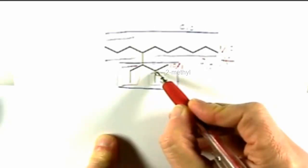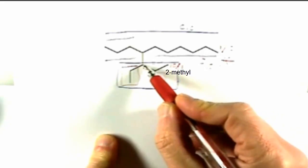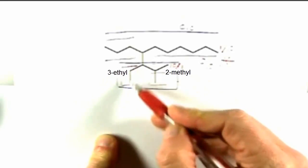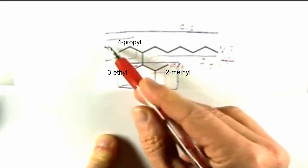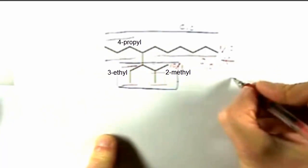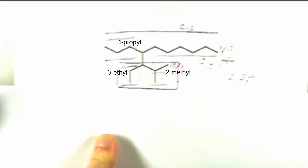2 has a methyl off of it. Carbon 3 has an ethyl off of it. And carbon 4 has this propyl group. So one set of numbers lead to 2, 3, and 4.